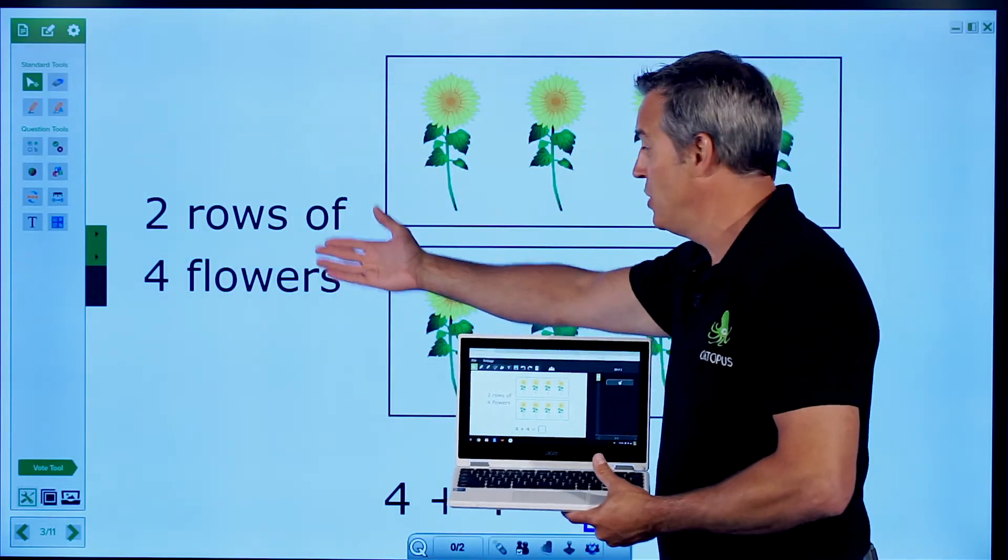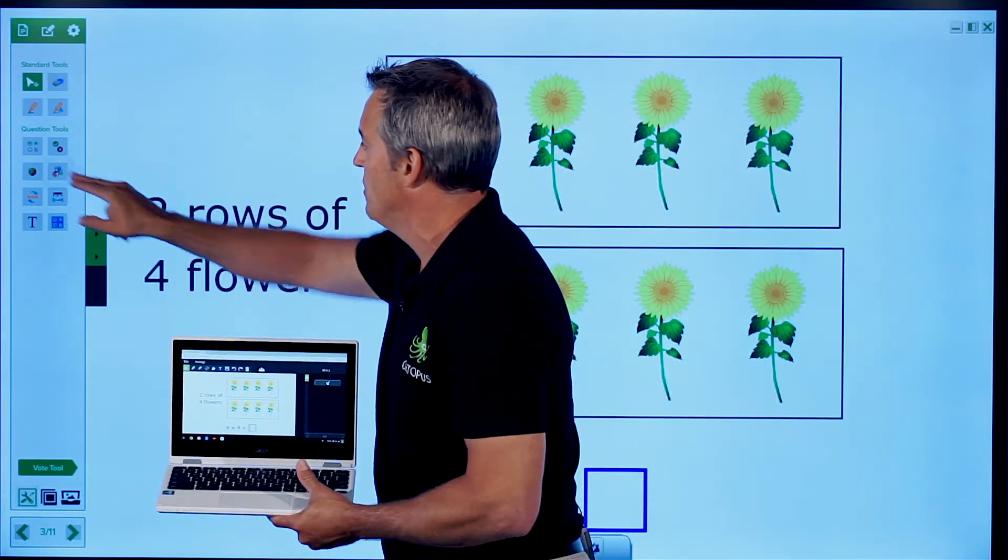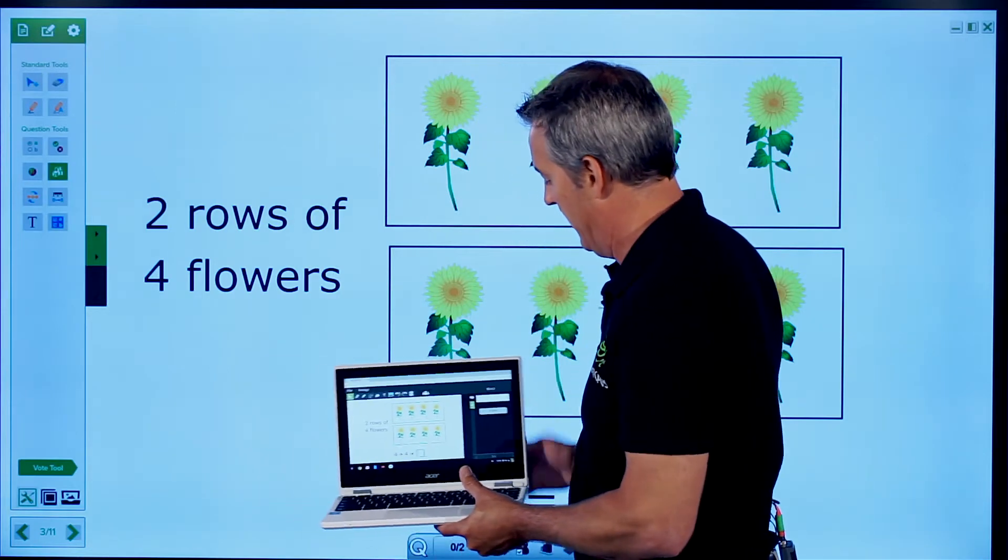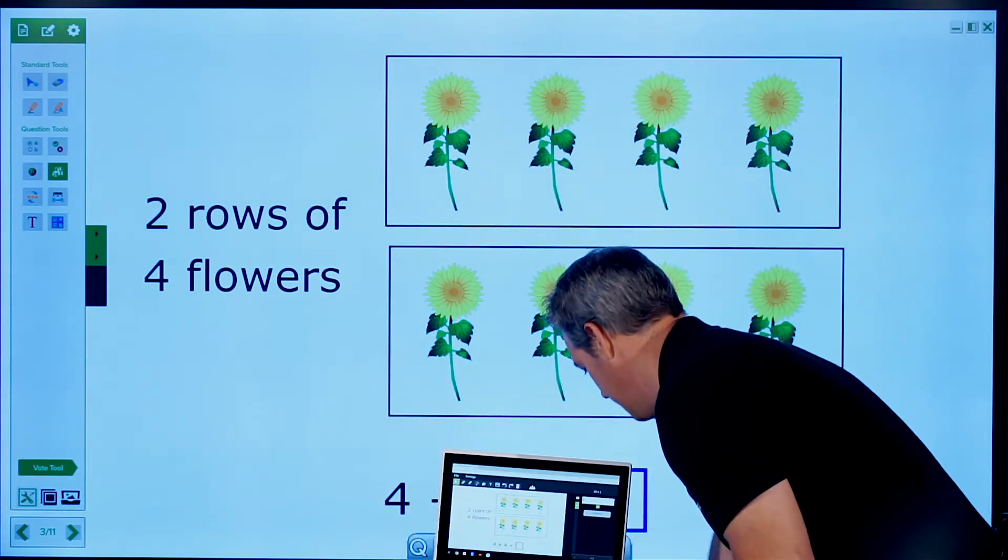we're talking about two rows of four flowers. So four plus four equals. We could simply pose a numeric question here and the students would have to type in the answer and I can see how they've responded.